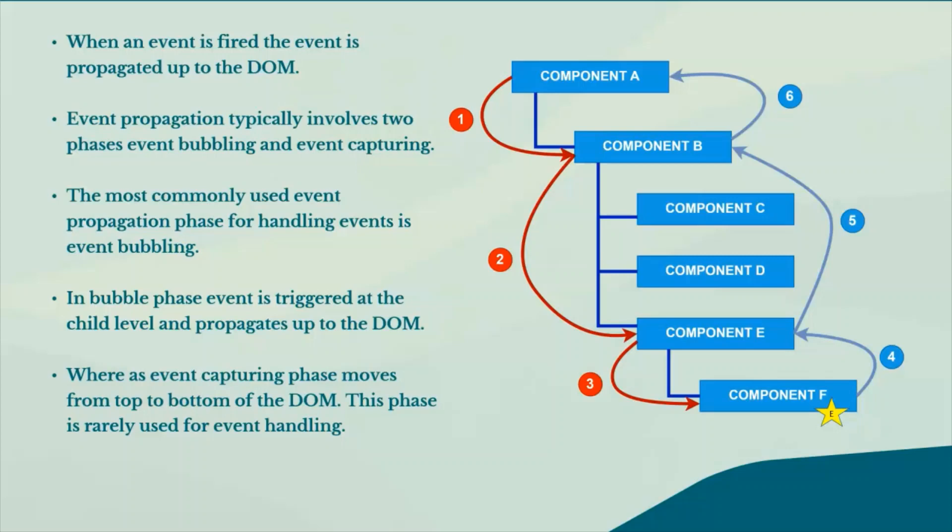In the bubble phase, an event is triggered at the child level and propagates up to the DOM. In the capture phase, it moves from top to bottom of the DOM. This capture phase is rarely used for event handling.